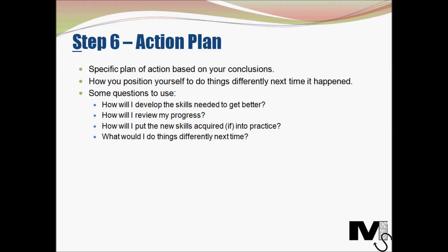Then we move on to the final stage, which is action plan. This is the stage where we actually start taking actions, go on a course correction route, and start implementing what we planned. You create a specific plan of action based on your conclusions. The plan will entail what you need to do in preparation for the event happening again and how you position yourself to do things differently next time. Questions to ask: How will I develop the skills needed? How will I review my progress? How will I put new skills into practice? And how will I do things differently next time?